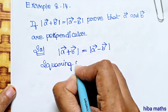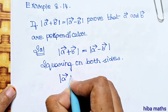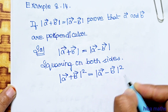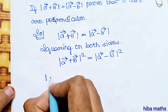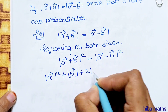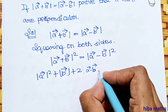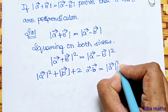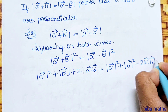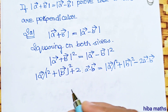Squaring on both sides: (vector a plus vector b) squared is equal to (vector a minus vector b) squared. Expanding: a squared plus b squared plus 2 times (vector a dot vector b) is equal to a squared plus b squared minus 2 times (vector a dot vector b).